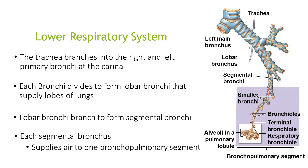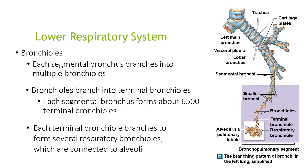For the lower respiratory system, the trachea branches into the right and left primary bronchi at the carina. Each bronchus divides to form lobar bronchi that supply lobes of the lungs. Lobar bronchi then branch to form segmental bronchi, and each segmental bronchus supplies air to one bronchopulmonary segment. Each segmental bronchus branches into multiple bronchioles. Bronchioles branch into terminal bronchioles — each segmental bronchus forms about 6,500 terminal bronchioles — and each terminal bronchiole branches to form several respiratory bronchioles, which connect to the alveoli.